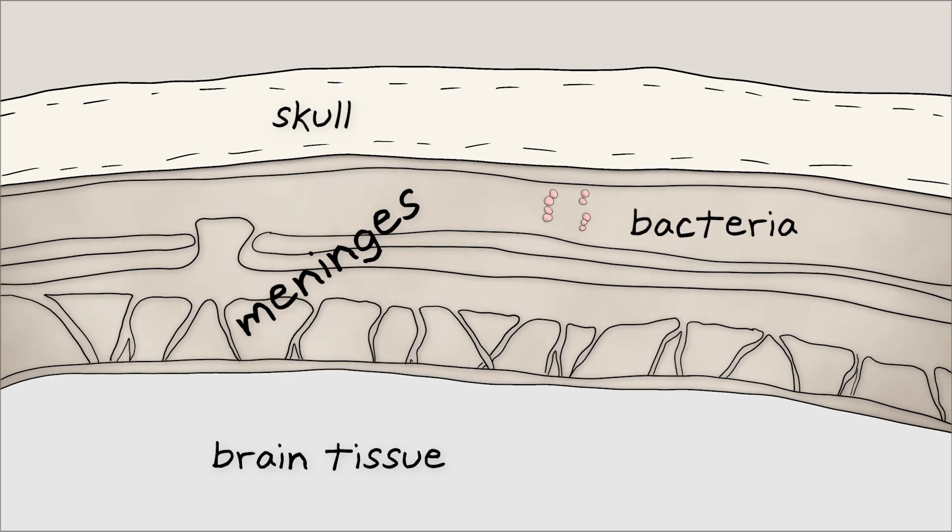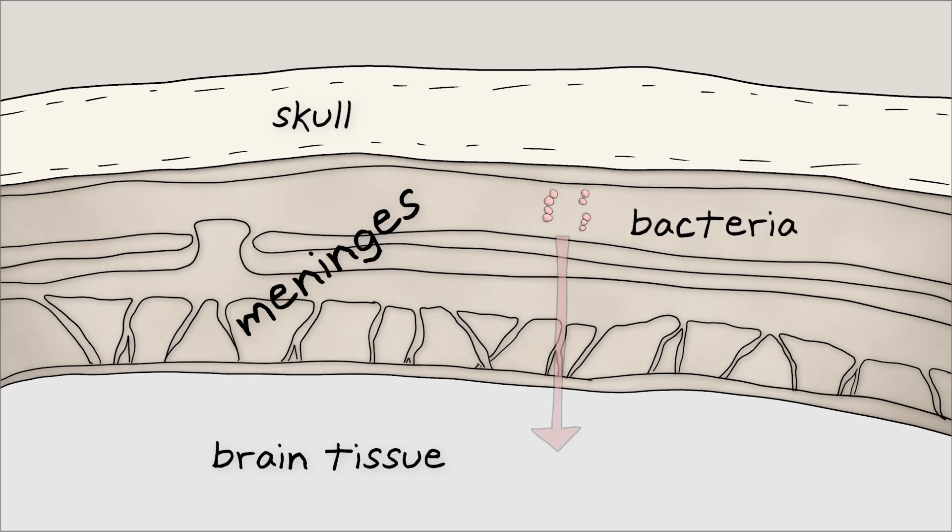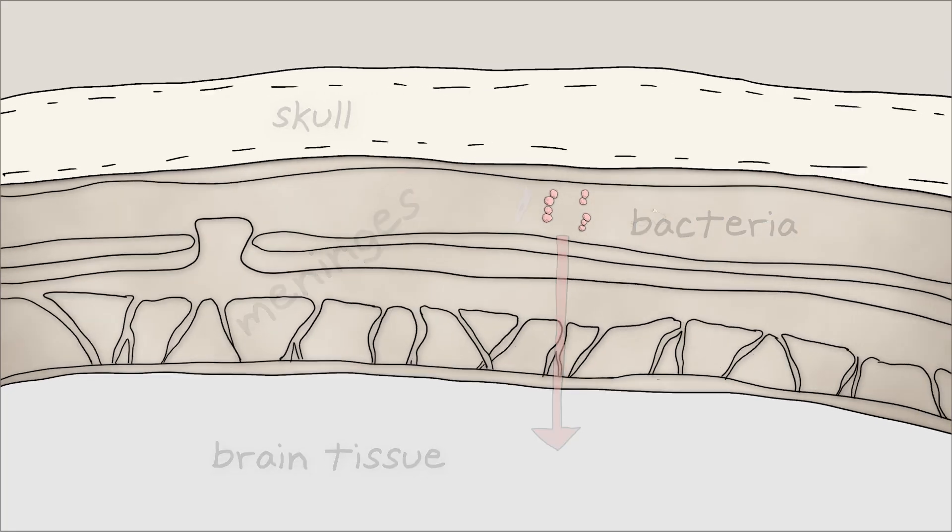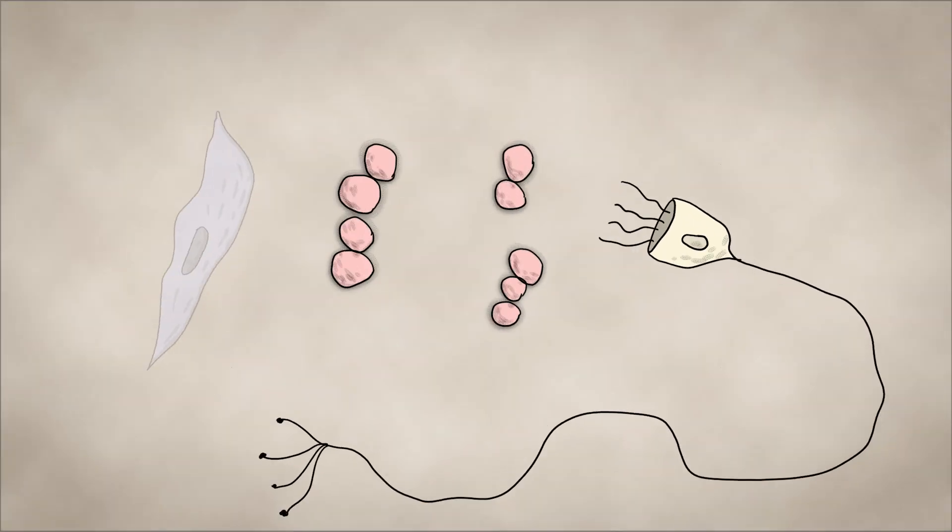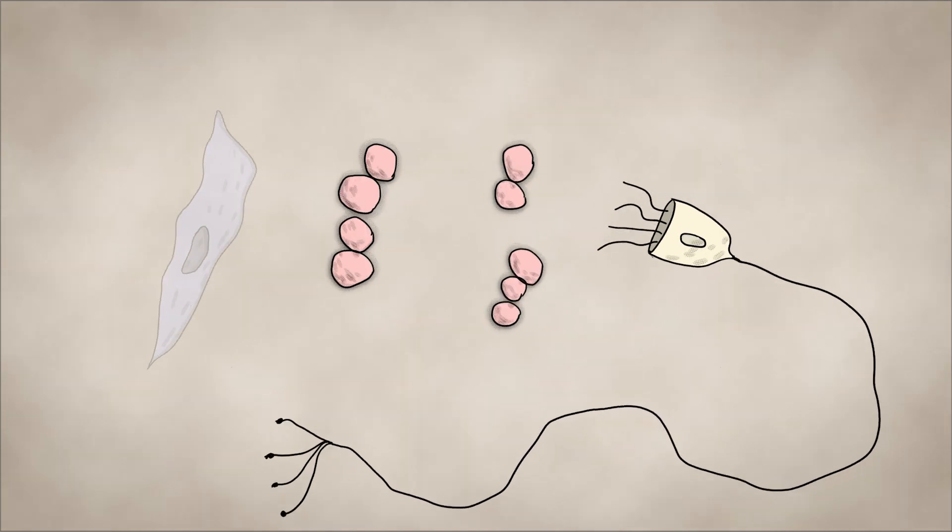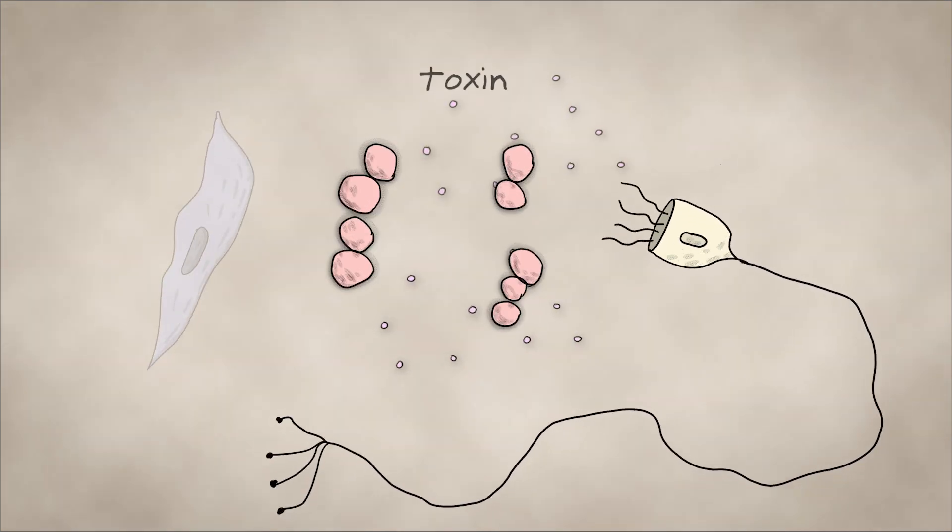In meningitis, bacteria are able to invade the brain unhindered. Why? The researchers found that when bacteria reach the brain's topmost protective layer, they release a toxin.